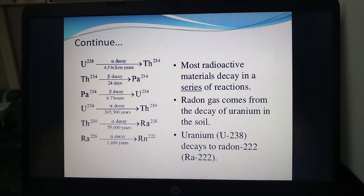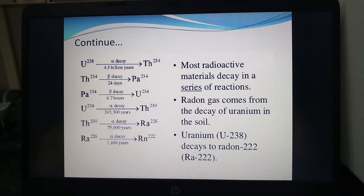There are numerous examples. Most radioactive elements decay in a series of reactions — it is not a stopping reaction. Radon comes from the decay of uranium in the soil, and uranium decays through a chain of conversions.